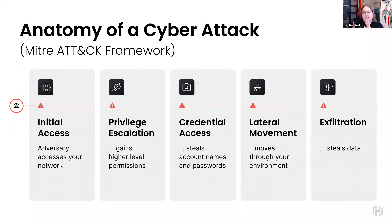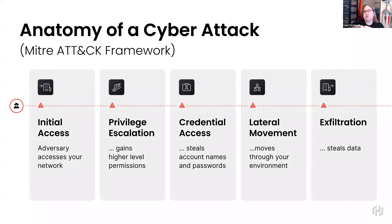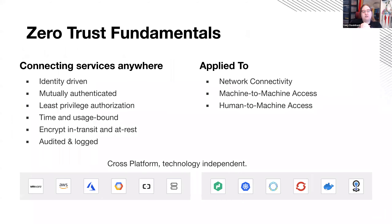The traditional castle-and-moat way of thinking focuses on that first point — initial access — and preventing it from happening. Whereas zero trust is more a set of principles aimed at reducing the risk of such an attack and potentially slowing or stopping an attacker, making sure they can do as little as possible after they've gained initial access. That's not to say preventing initial access isn't important — it's just that you don't want to rely on it as your only point of defense.